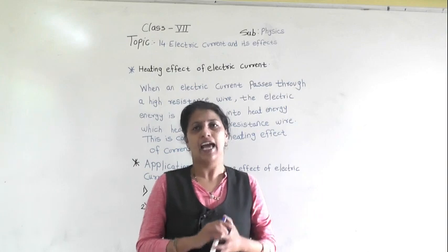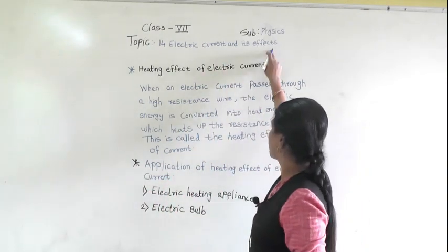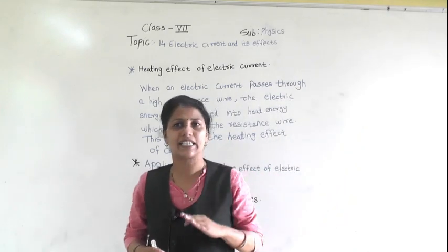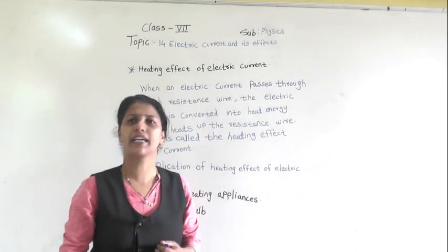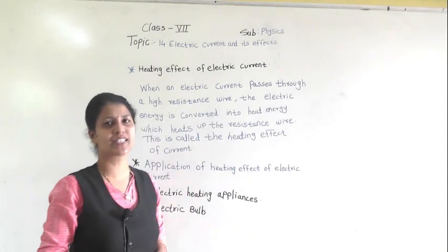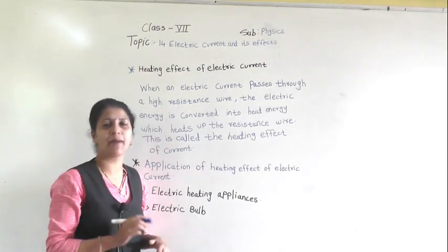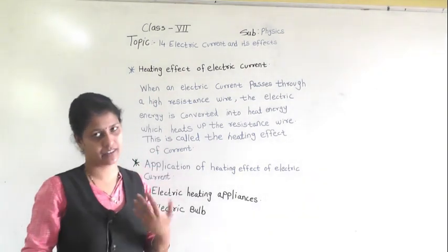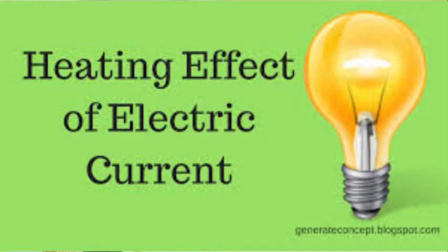The effects of electric current are mainly of three types: heating effect, magnetic effect, and chemical effect. In class 7, we are going to discuss the heating effect and magnetic effect in detail. So first, we will see the heating effect of electric current.